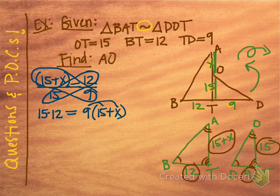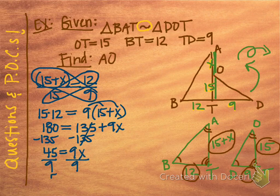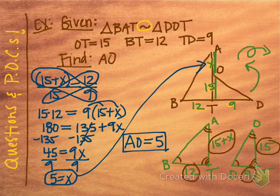We've got 15 times 12 as one cross-product, and 9 times (15 + X) as the other. Cross-products are equal, so we solve: 15 × 12 = 180. Distributing the 9 gives 135 + 9X. Subtracting 135 from both sides gives 45 = 9X. Dividing by 9 gives X = 5. Looking back at our original picture, X was the length of AO, so AO equals 5. That's similarity.